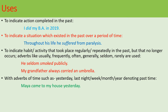The uses of simple past tense: First, it is used to indicate an action completed in the past. For example, 'I did my BA in 2019.' 'They gave me medication to help me relax.' Second use is to indicate a situation which existed in the past over a period of time. For example, 'Throughout his life, he suffered from paralysis.' 'He lived in Paris during his last years.'